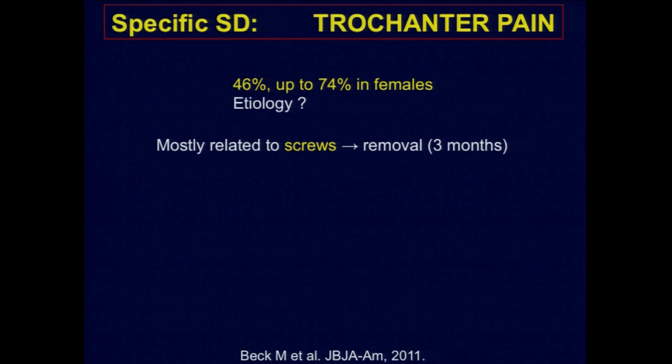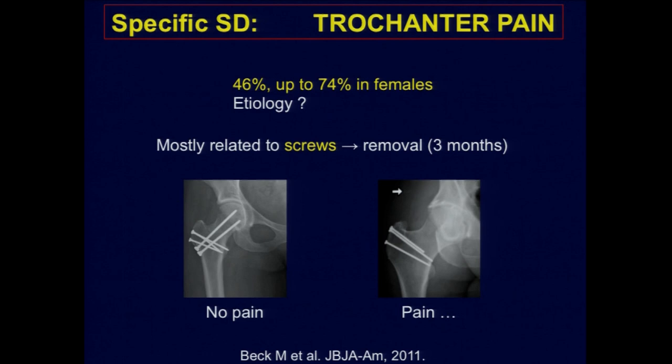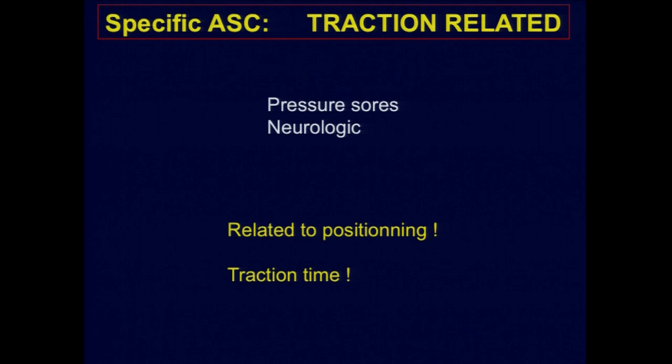Trochanter pain — 50% of patients have trochanter pain, probably related to the screws. If I have a patient complaining about trochanter pain at three months, I remove the screws. If they have no pain, I don't, because I avoid one more surgery. You can discuss if it's advisable in young patients to remove the screws to avoid problems years later when you might need a total hip replacement. The problem is we have patients with more hardware who have no problem, and patients with just a little hardware who are painful.